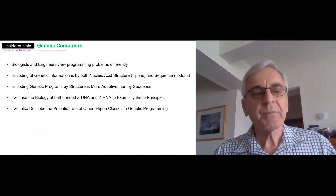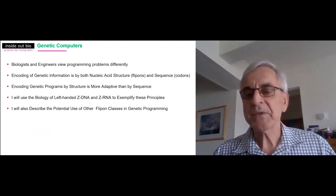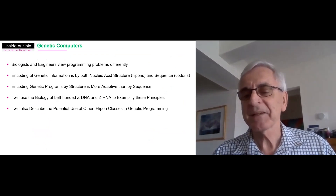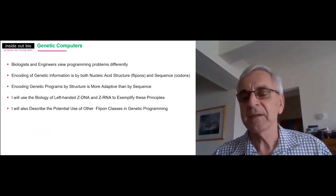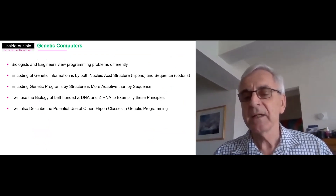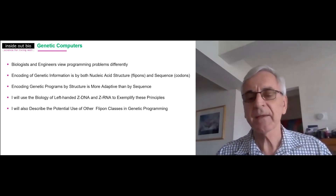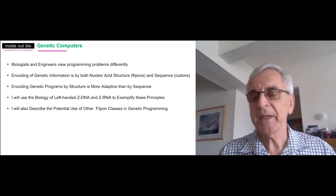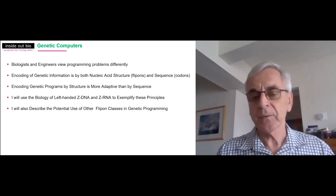Here's the outline of today's program. We'll start by talking about how biologists and engineers view programming problems differently. We'll discuss a question from Levinik — can a biologist fix a radio — to illustrate how differently we think. This will lead to a discussion of how genetic information is coded and how engineers approached this problem very differently from how biology solved the challenge. I will then introduce flip-ons using the example of ZDNA, a left-handed high-energy alternative to the Watson and Crick B-DNA, leading to a wider discussion of flip-ons and genetic programming.